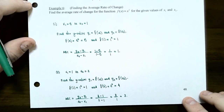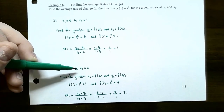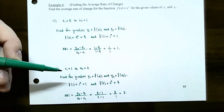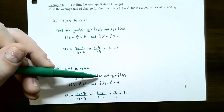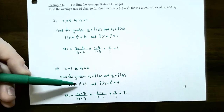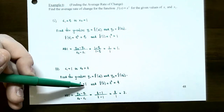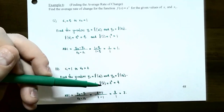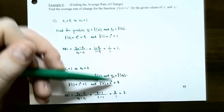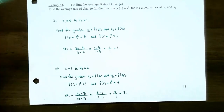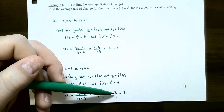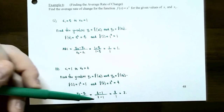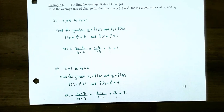For part 2, x1 = 1 and x2 = 2. We should expect a different average rate of change because the graph is a curve, not a straight line. Find the y values: f(1) = 1² = 1, so y1 = 1; f(2) = 2² = 4, so y2 = 4. The slope is (4 − 1) ÷ (2 − 1) = 3 ÷ 1 = 3. The average rate of change, or slope of the secant line, is 3.